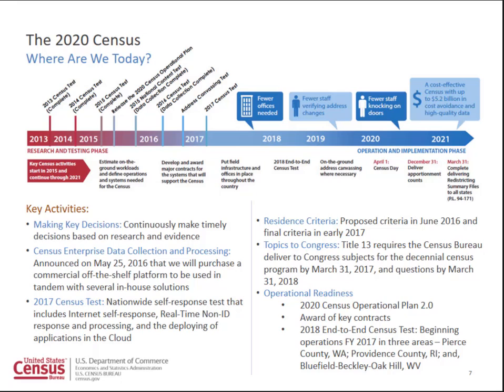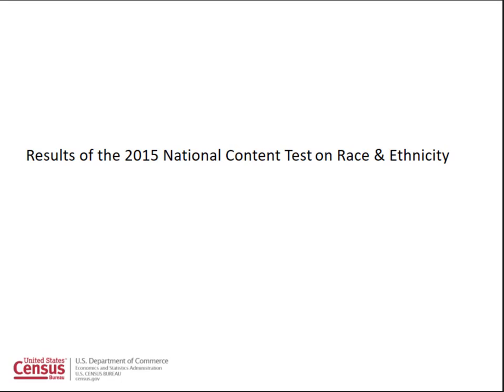Everyone thinks the 2018 end-to-end census test is next year. Let me tell you today it starts in just a few months. The end-to-end census test is a dress rehearsal of the census from soup to nuts. That means we start with our address canvassing operation. We will be in the field for address canvassing in August of this year.